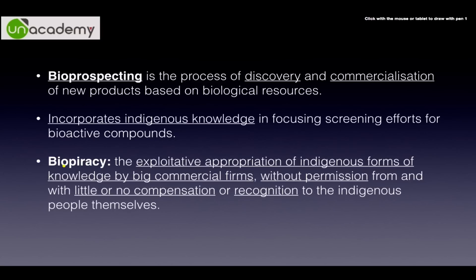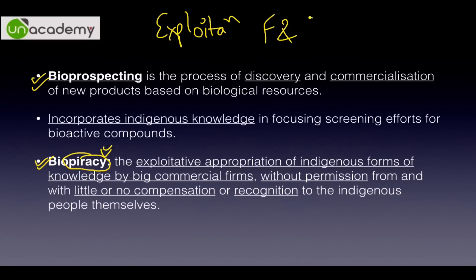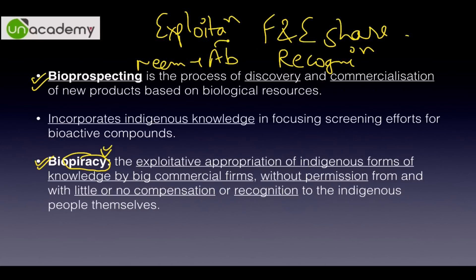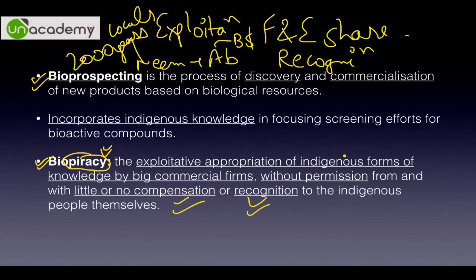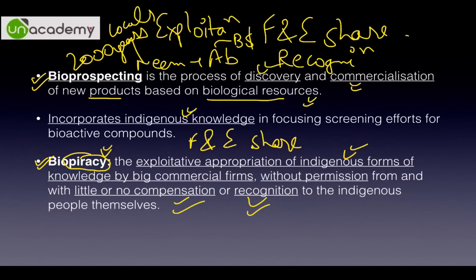There are two similar terms: bioprospecting and biopiracy. Biopiracy is negative — you exploit biological resources but you don't pay a fair and equitable share, and you don't give recognition. For example, you come to India, take neem, make an antibiotic, sell it for billions of dollars, but give nothing to locals who have known its uses for two thousand years. Bioprospecting is positive — you discover and commercialize new products based on biological resources, give fair and equitable share, give recognition, and screen bioactive compounds for developing drugs and health supplements.